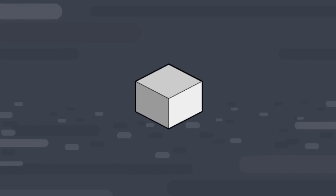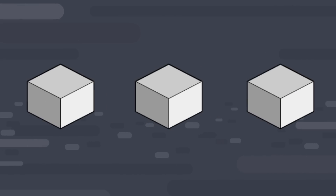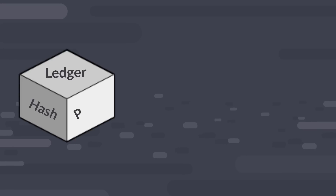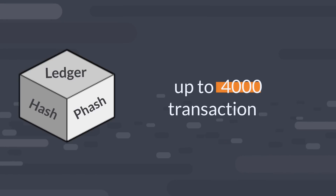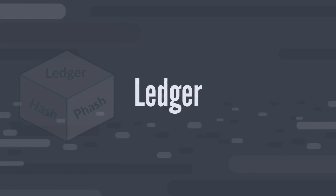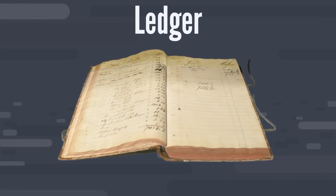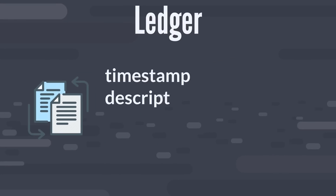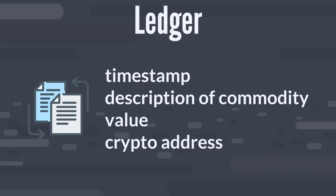The blockchain consists of blocks. A block is a package of information wrapped up primarily with three types of data: ledger, hash, and previous hash. Each block can store up to 4,000 or even more transactions. Ledger is a list of transactions including information such as timestamp, description of commodity, value, and crypto address.